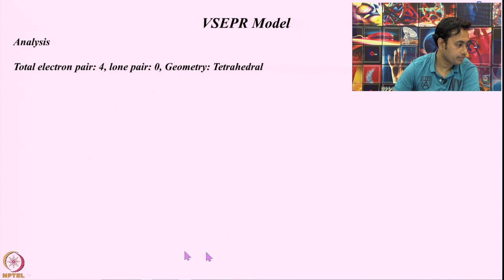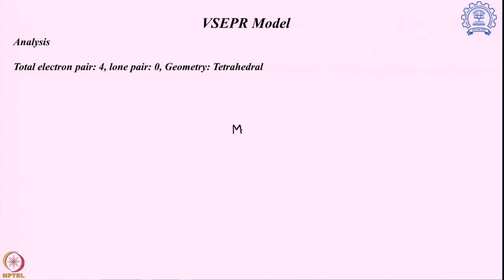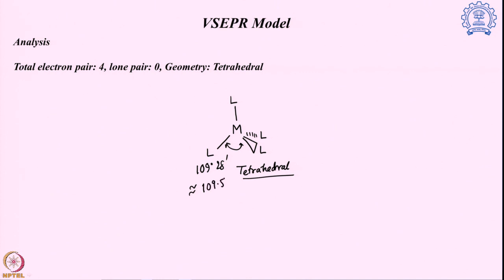Next, in a four-coordination system with four bond pairs and no lone pairs, the preferred geometry is tetrahedral. Each bond is separated from the others by 109 degrees 28 minutes, or approximately 109.5 degrees — the maximum separation possible in three-dimensional space — giving minimum electron–electron repulsion.